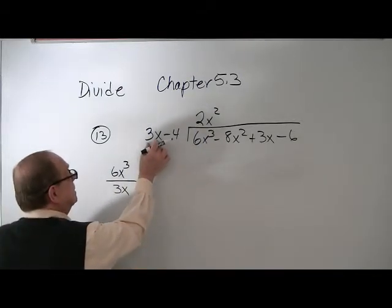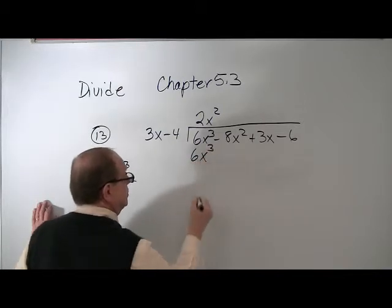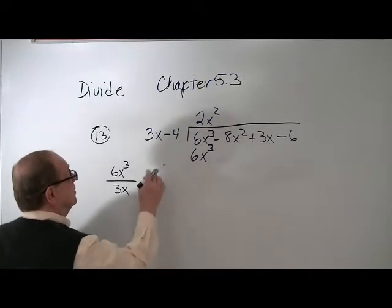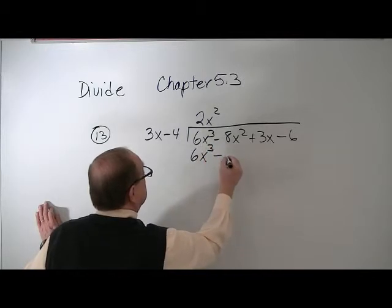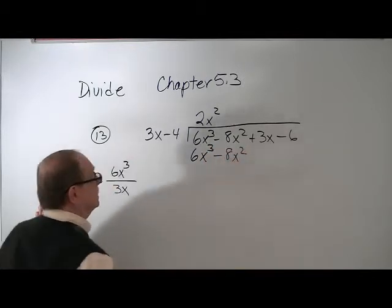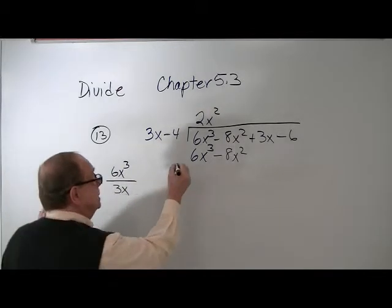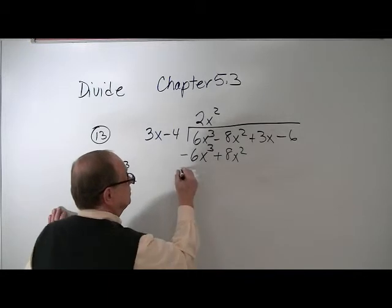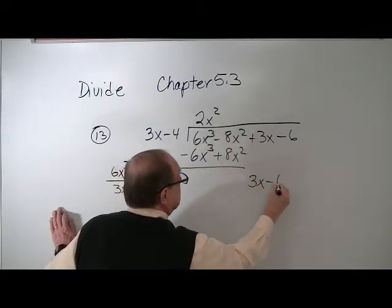So now 3X times 2X squared gives us 6X cubed. And that's what we want. So we can cancel those out. Then a negative 4 times this gives me a negative 8X squared. And the rule is we change the signs. These both cancel out.